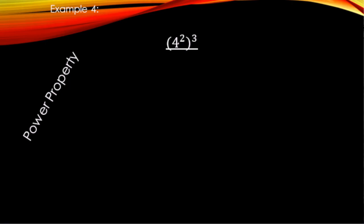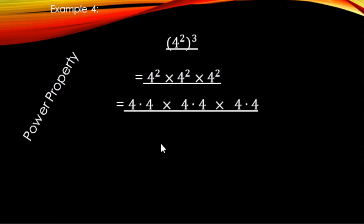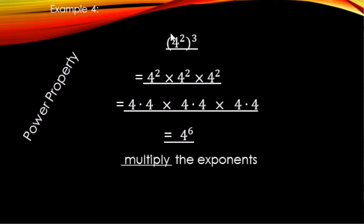Now the power property. We have (4 squared) to the third power — three groups of 4 squared, each containing two 4s, for a total of six 4s being multiplied. So when we have a power raised to another power, we multiply the exponents: 2 times 3 equals 6, giving 4 to the sixth.